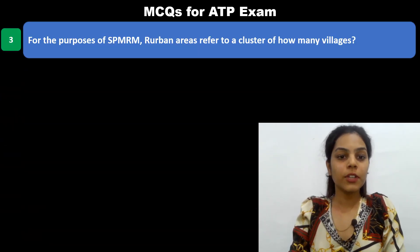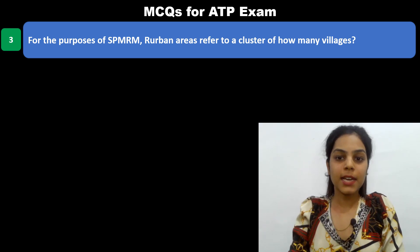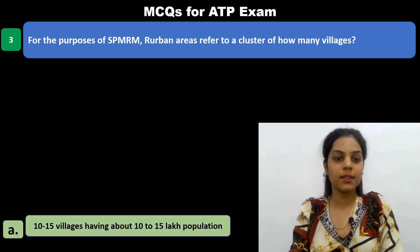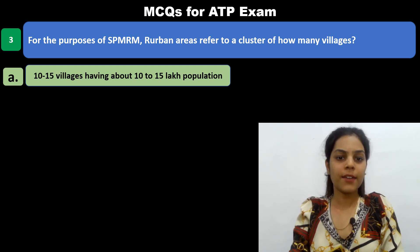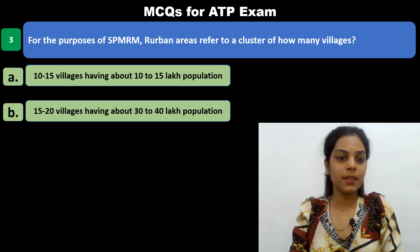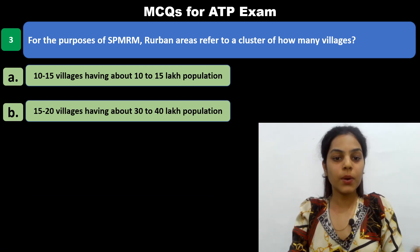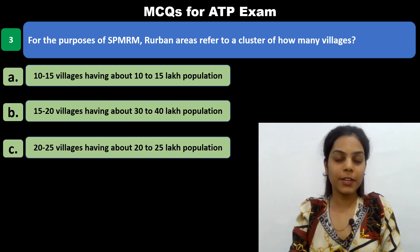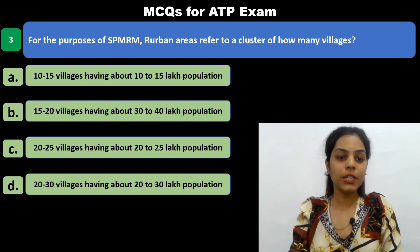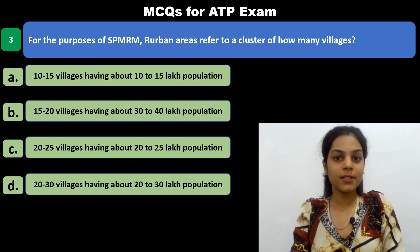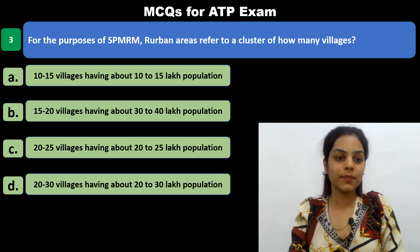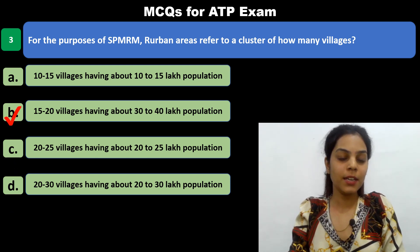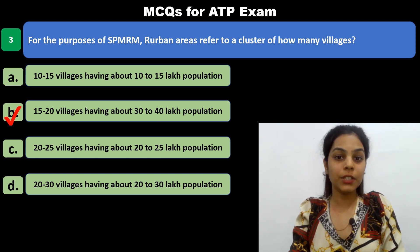Third MCQ: For the purpose of SPMRM, urban areas refer to a cluster of how many villages? Options: A — 10 to 15 villages having about 10 to 15 lakh population; B — 15 to 20 villages having about 30 to 40 lakh population; C — 20 to 25 villages having about 20 to 25 lakh population; D — 20 to 30 lakh population. The answer is option B: 15 to 20 villages having about 30 to 40 lakh population.